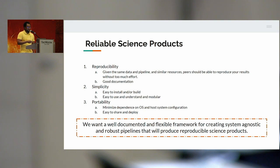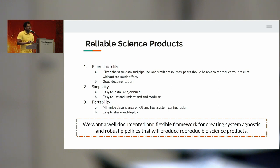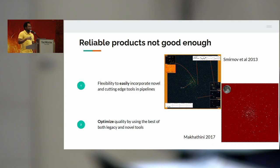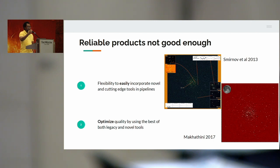To summarize, we want a well-documented and flexible framework that will allow us to create pipelines which are robust, reproducible, and which produce quality data products. But reliability is not good enough — you may have a robust pipeline but it may produce mediocre science results. So we also need the ability to keep up with novel and cutting-edge tools in the science, with the flexibility to plug-and-play new tools as they are developed, so that we keep up with whatever is current.